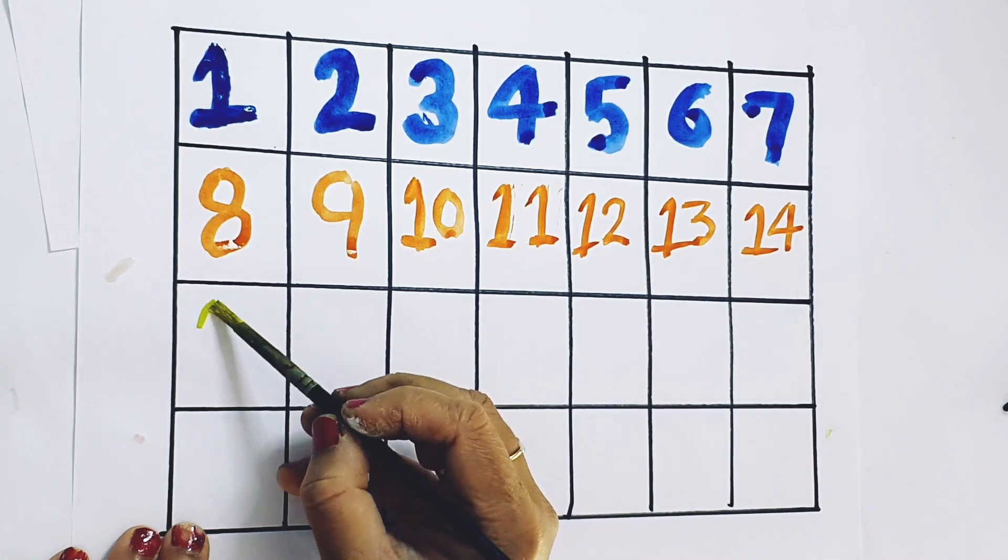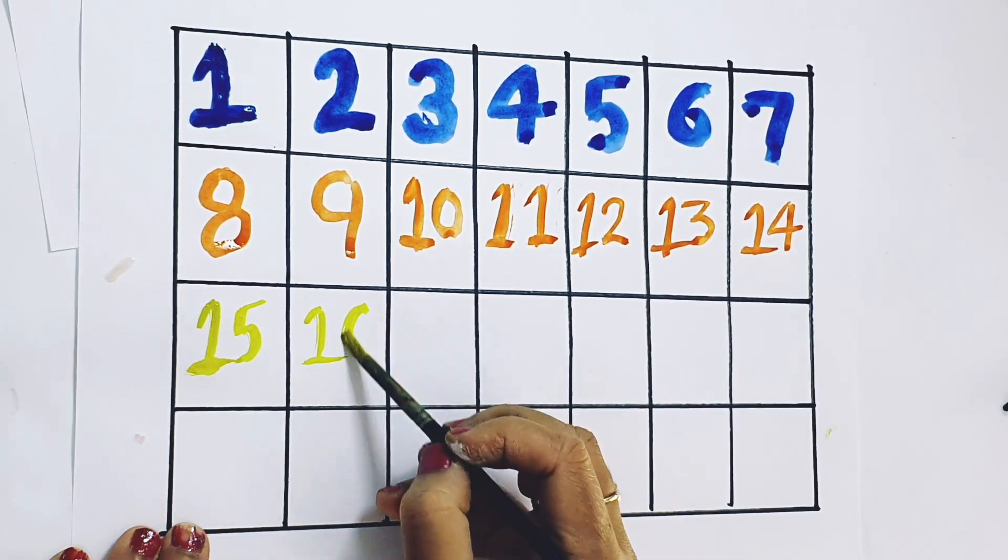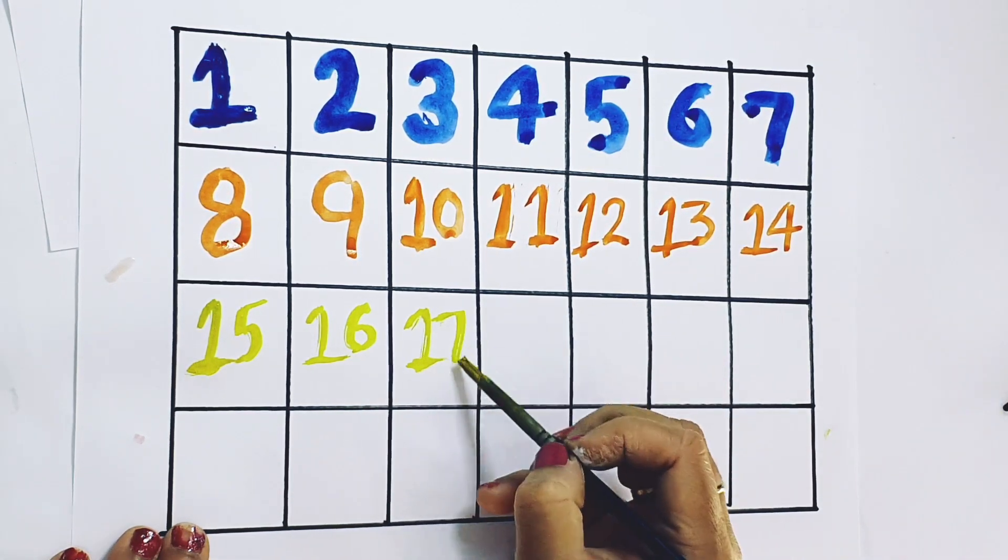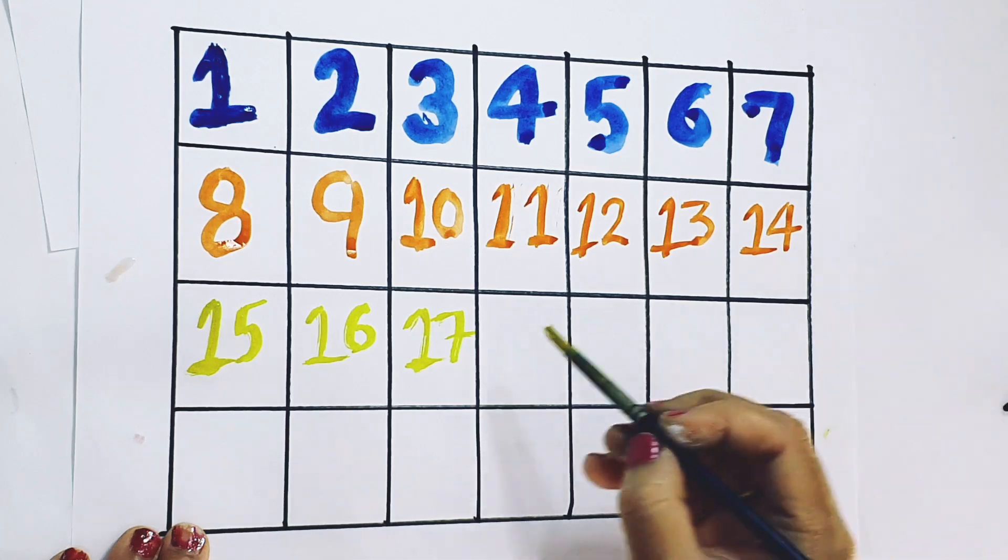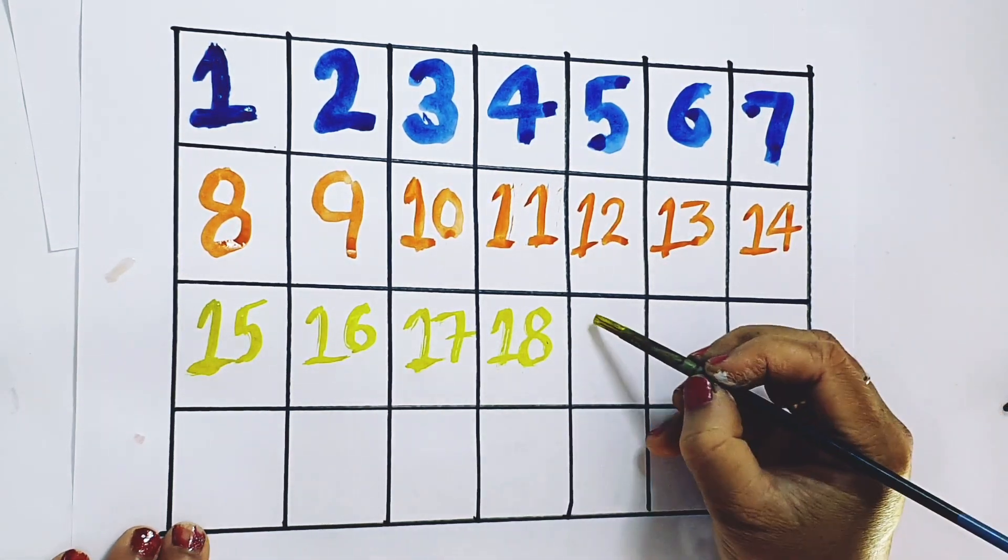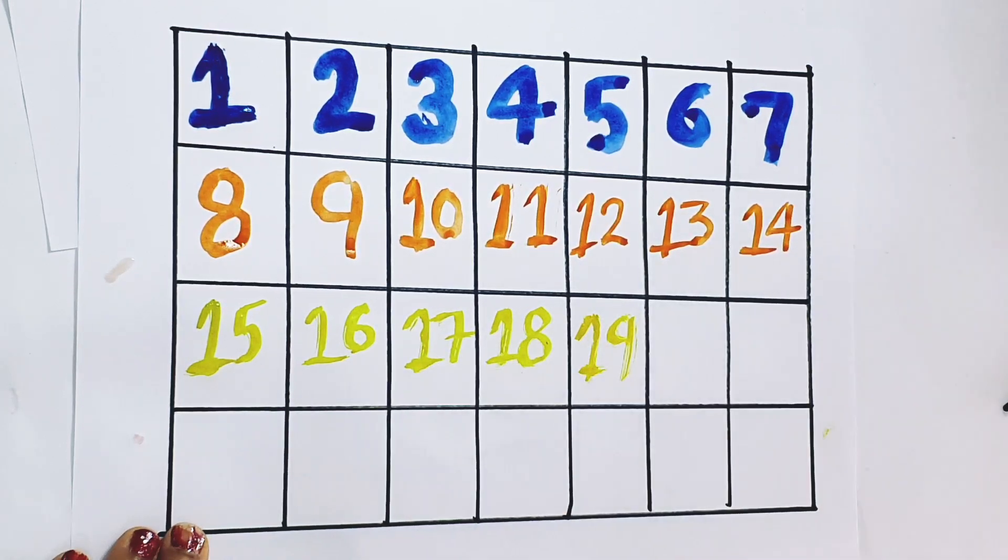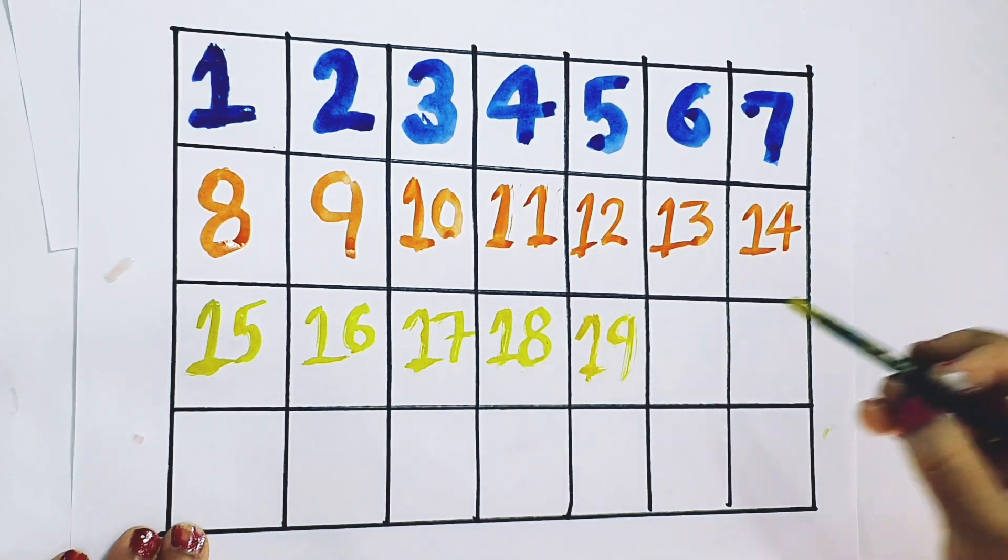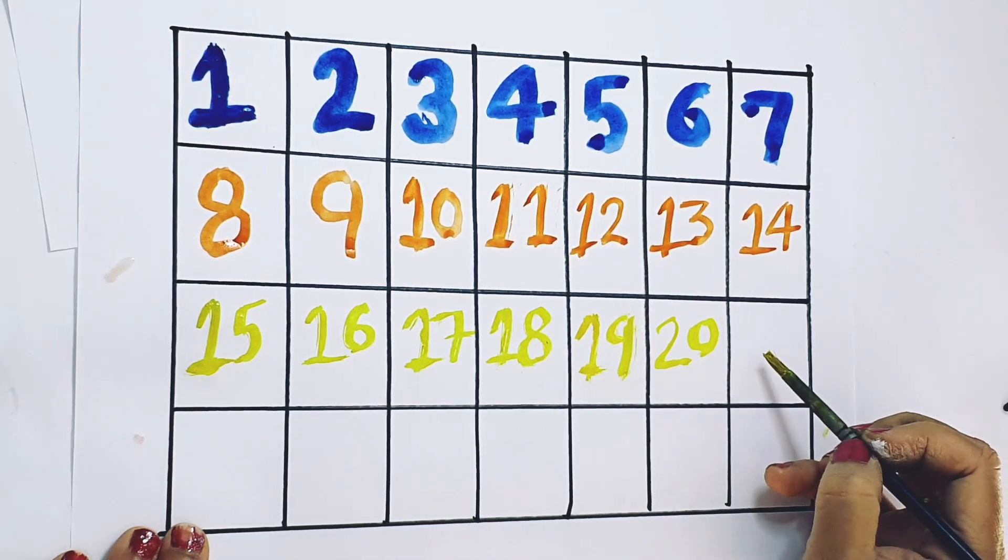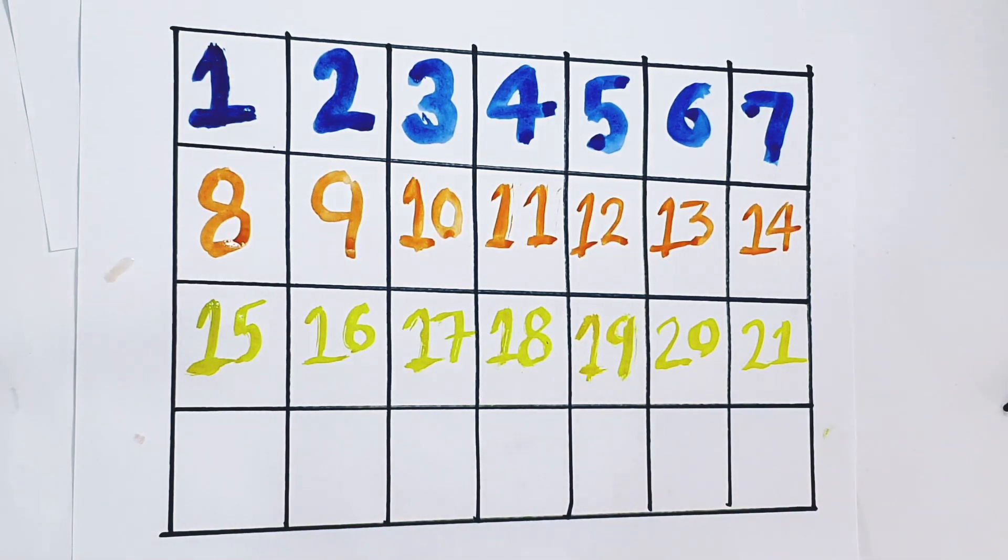Yellow color. 15, number 15. 16, number 16. 17, number 17. 18, number 18. 19, number 19. 20, number 20. 21, number 21.